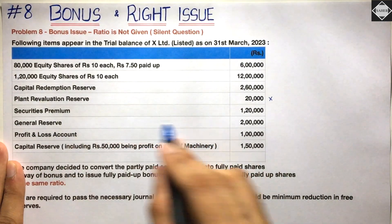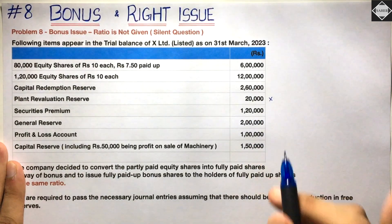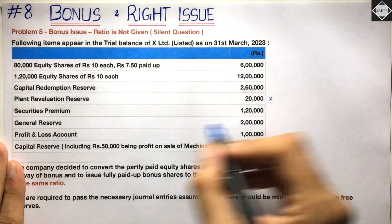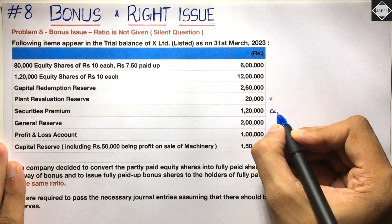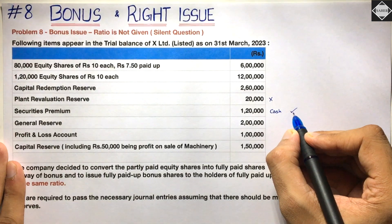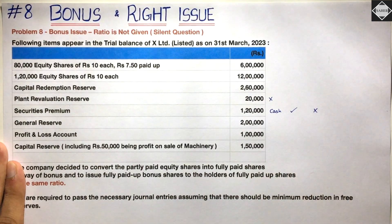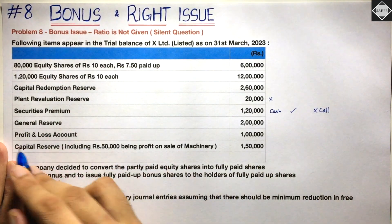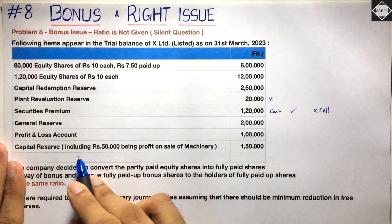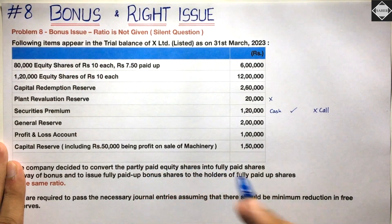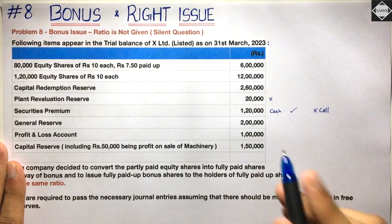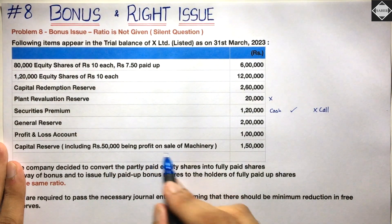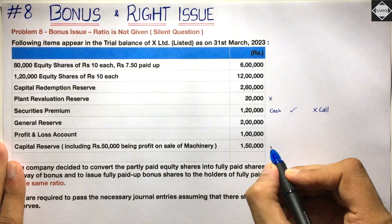Securities premium of 1 lakh 20,000 — nothing specific has been said about it. We can use securities premium for bonus, but here we have both a bonus call and issuing fully paid up bonus shares. Securities premium is realized in cash, so you can use it for issuing fully paid up bonus shares, but NOT for bonus call. Then we have general reserve and profit and loss balance. Capital reserve is 1 lakh 50,000 — but only 50,000 is profit on sale of machinery, which is realized in cash. Only that 50,000 can be used.